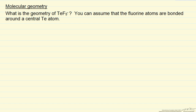In this problem we want to determine the geometry of this ion. This is the ClF₅⁻ ion — chlorine pentafluoride ion. It has one additional electron from the electrons that are in our starting elements. We want to draw a Lewis structure in order to determine what this looks like.